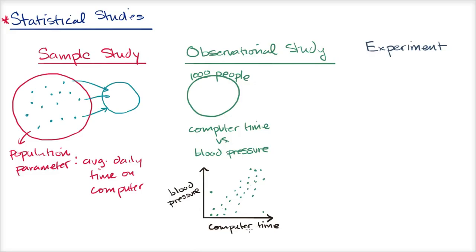When you do or interpret observational studies, it's very important not to say this shows that computer time causes blood pressure changes, because this is not showing causality. You also can't say blood pressure causes people to spend more time in front of a computer. All you're saying is there's a correlation — these two variables move together. You cannot make a conclusion about causality from an observational study.